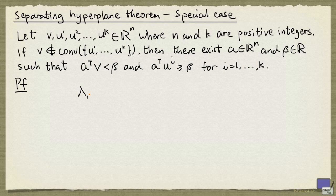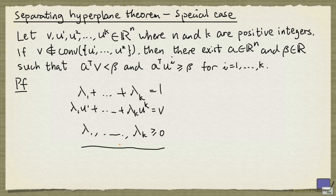And so if we look at this system here, there's going to be no solution, because the left-hand side here is precisely a convex combination of u1 up to uk. We have these scalars, they are non-negative, and they sum up to 1.